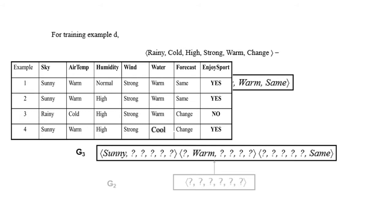For the fourth attribute 'strong', there is no opposite value in x1 or x2. Similarly for the fifth attribute 'warm'. For the sixth attribute, the question mark is compared with 'change', and the opposite value is found in x1 and x2. This correctly classifies x1 and x2 as positive and x3 as negative, so only this hypothesis is included. G3 therefore consists of three hypotheses.